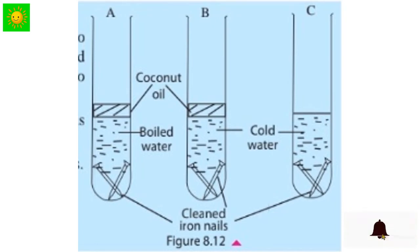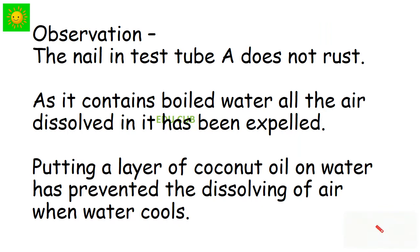The nail in test tube A does not rust as it contains boiled water. All the air dissolved in it has been expelled. Putting a layer of coconut oil on water has prevented the dissolving of air when water cools. Test tube B contains cold water, therefore its water contains air.